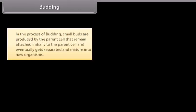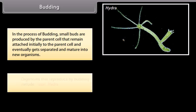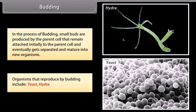In the process of budding, small buds are produced by the parent cell that remain attached initially to the parent cell, and eventually get separated and mature into new organisms. Organisms produced by budding include yeast and hydra.